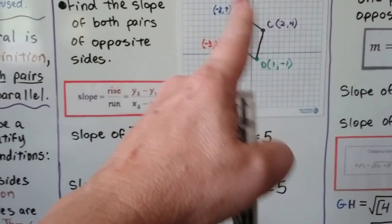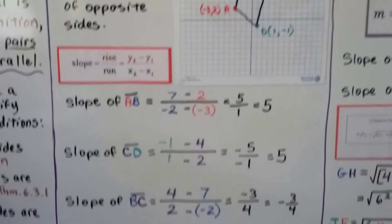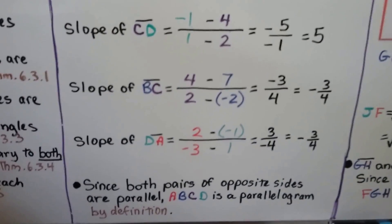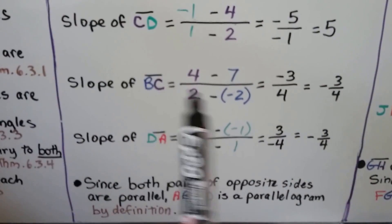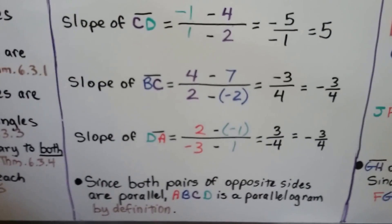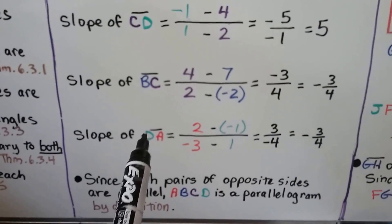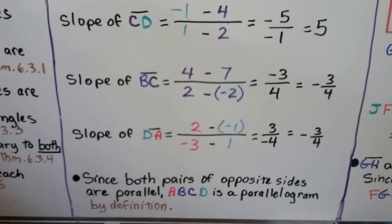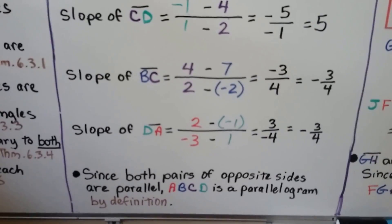Now we're going to do BC, this one, and compare it to this one, AD or DA. We do BC, and in the slope formula, we put in the ordered pairs for x1, y1, x2, y2, and we get a negative 3 fourths. We do it for segment DA, and we also get a negative 3 fourths. So we know those two are parallel.